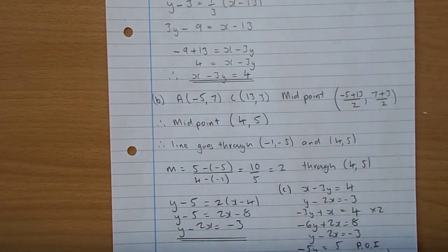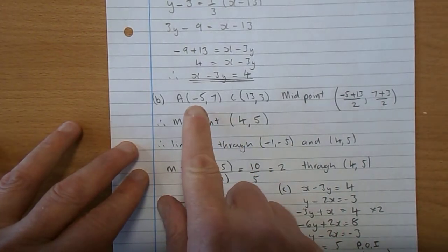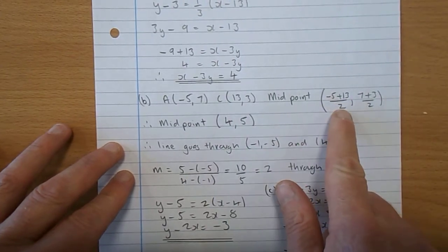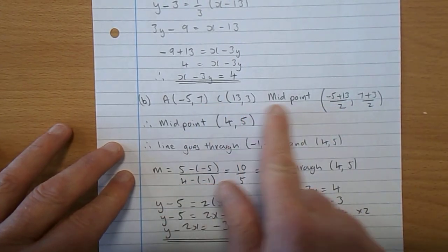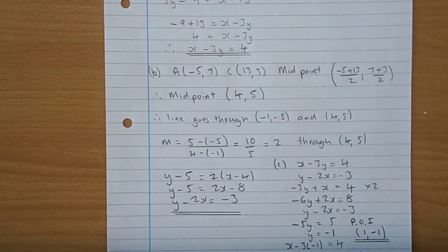Go on to part B, find the equation of the median from B. Well, the median hits AC at its midpoint, so we need to get the midpoint from A to C. To do that, you add minus 5 to 13 and half it. You add 7 to 3 and you get 10 and you half it. So the midpoint is 4, 5.